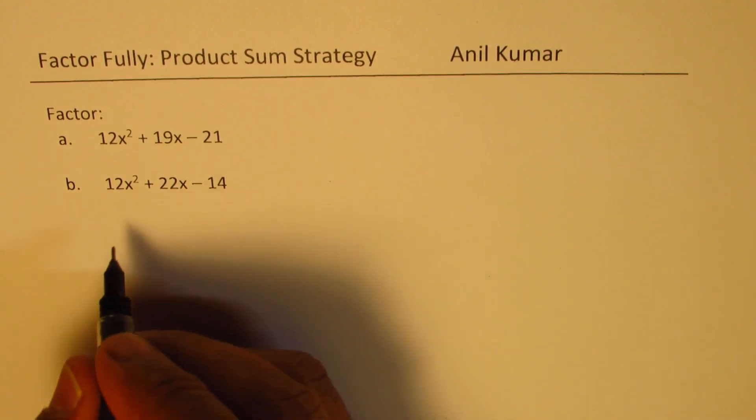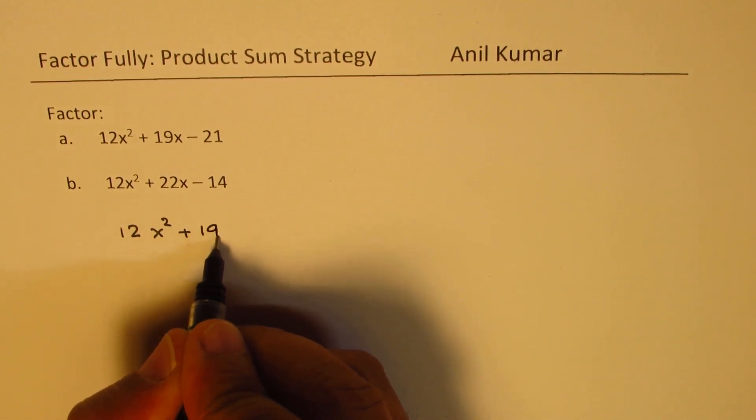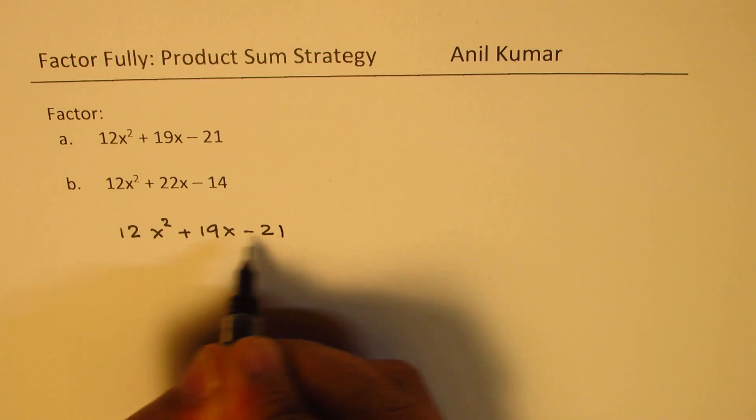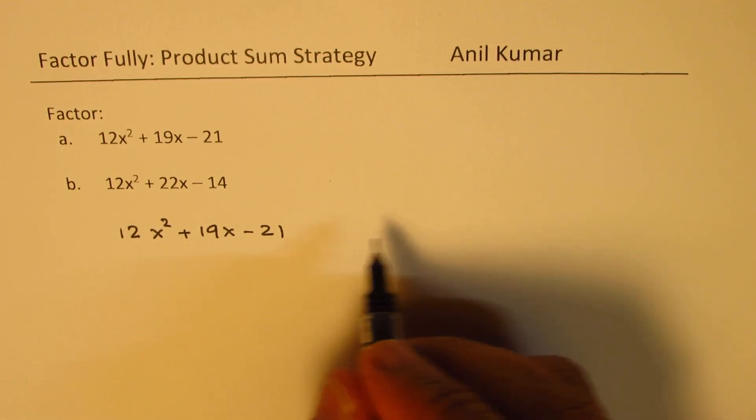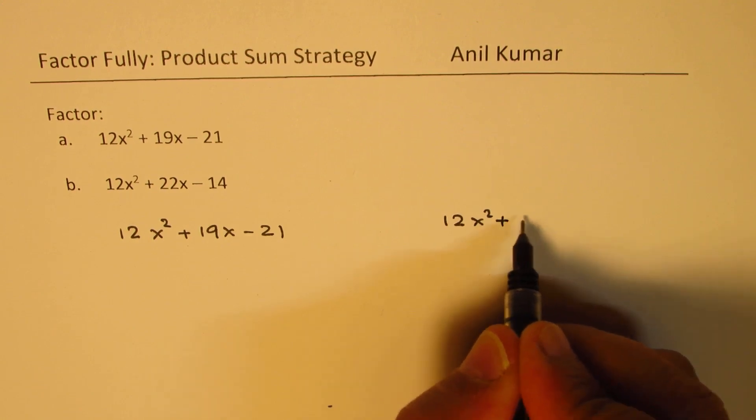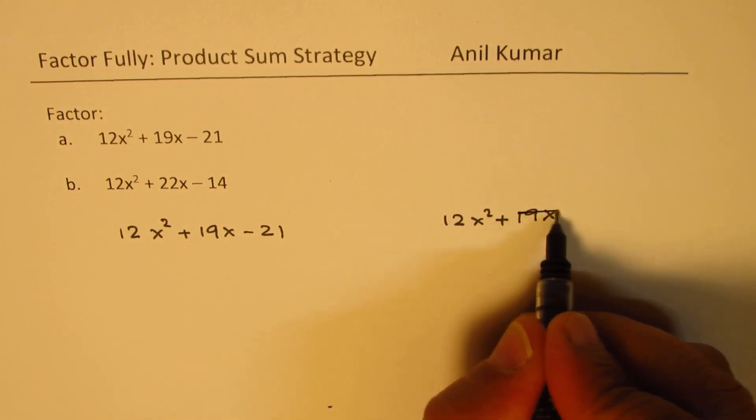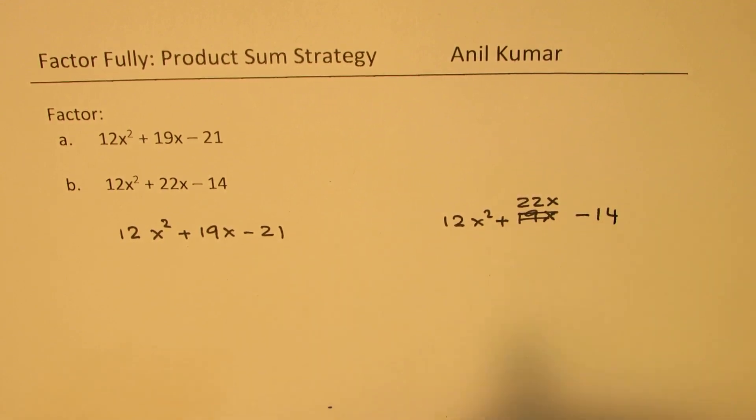Let's rewrite them. So we are working with 12x² + 19x - 21 as first trinomial. The second one is 12x² + 22x - 14. We need to factor them.